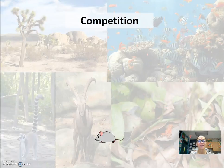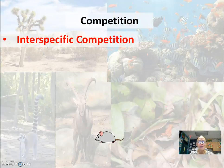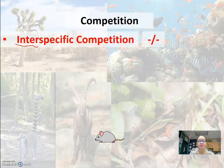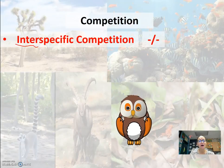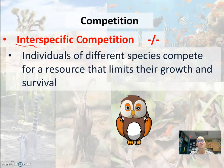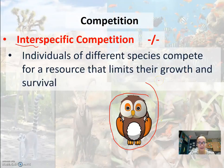Now here you have competition. Interspecific competition is when two different species compete — it's kind of a lose-lose because they're both struggling to get food. With this negative-negative interaction, it's hard for both populations to find food. An owl and a skunk may compete for the mice in that community. Individuals of different species compete for a resource that limits their growth and survival — the owl population's size will depend on how many mice they catch.